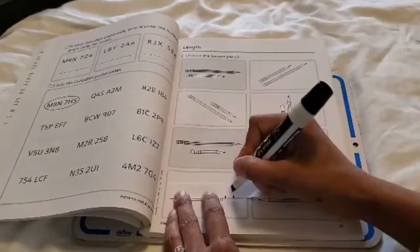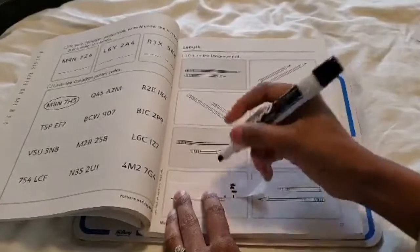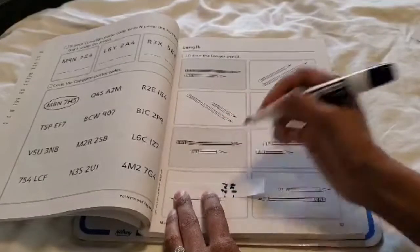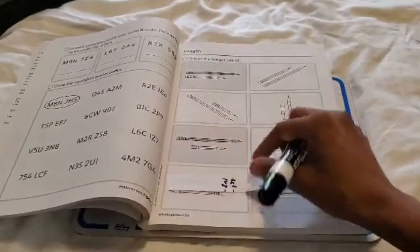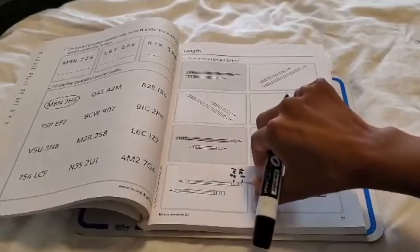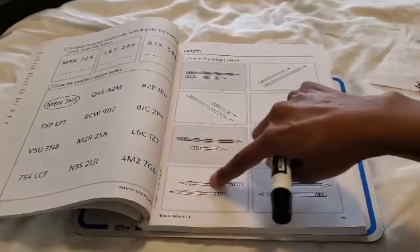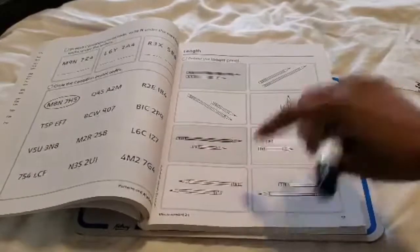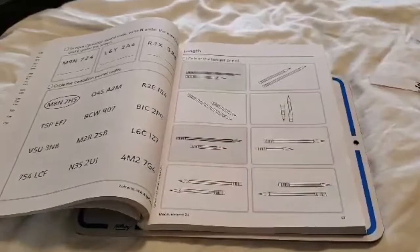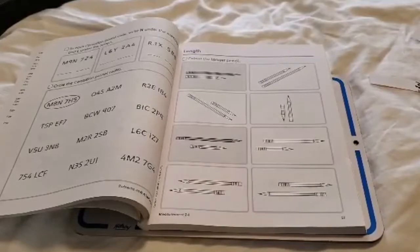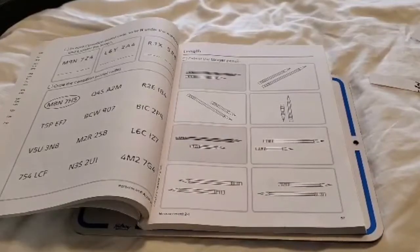So now I know that this was the first pencil that I measured and this was the second pencil I measured. Which one is longer? The one that's longer is this top pencil up here, so I would color in this pencil. And that's how you do page 57 on Jump Math 2.1.